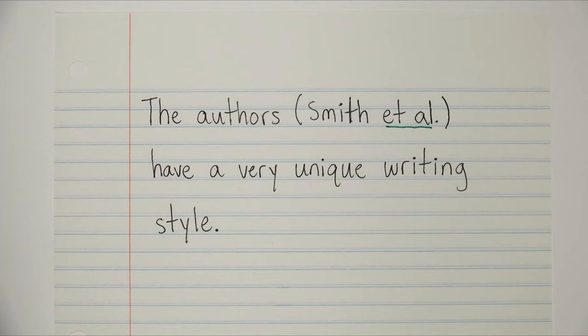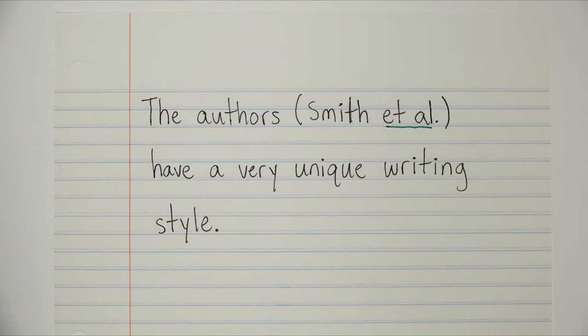So let's take a look. The authors, Smith et al., have a very unique writing style. So this is pretty simple. Et al. means and others. So basically what you're saying here is the authors, Smith and others, have a very unique writing style. And here you'll notice that there's no comma because you've only got one name before it in the list.